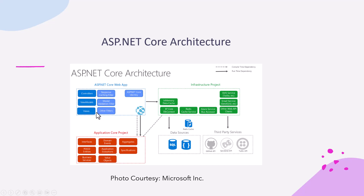This ASP.NET Core web app is dependent upon the application core project. The one-way arrow pointing from the web app to the application core project is a convention showing that dependency. The core project consists of POCO entities, business services, domain events, interfaces, application exceptions, value objects, aggregation, and specifications.